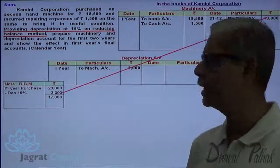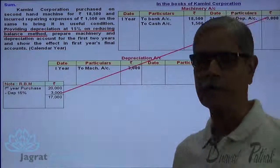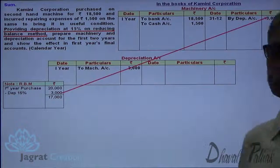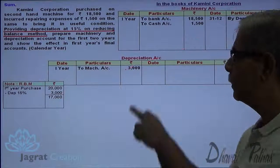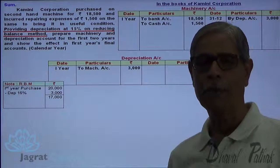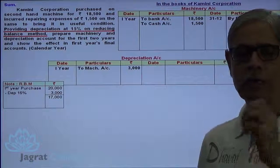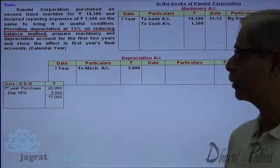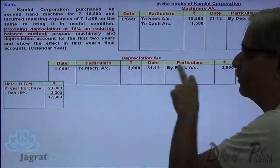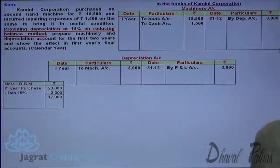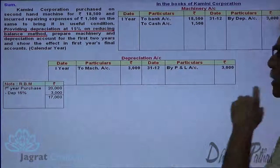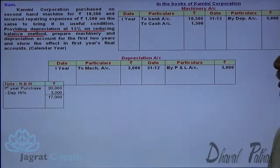I have not recorded this journal entry separately because I am only required to prepare the ledger accounts. Depreciation, being an annual expense, is transferred to the profit and loss account at the end of the year. So on 31st December, profit and loss account is debited $3,000 and depreciation account is credited $3,000. This is how the depreciation account gets closed.